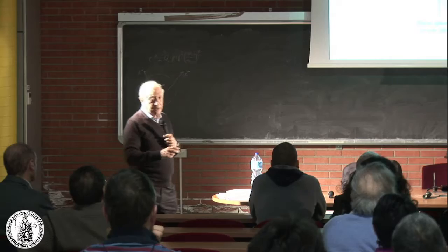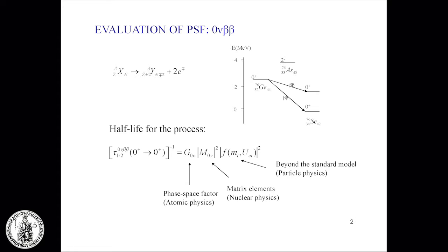Repeating what I've said already several times: this is zero-neutrino double beta decay, the emission of two electrons or two positrons, and the half-life is written in a specific form. Here is what we want to extract, but to extract this we need to know precisely what these two terms are. One depends on atomic physics — the phase-space factor — one on nuclear physics, and one on particle physics.